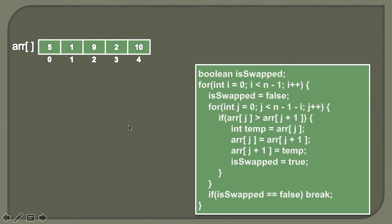Here, let's say we are given an unsorted array having five elements: 5, 1, 9, 2, 10. We want to sort this array in ascending order by applying the bubble sort algorithm. Here you can see the bubble sort algorithm.